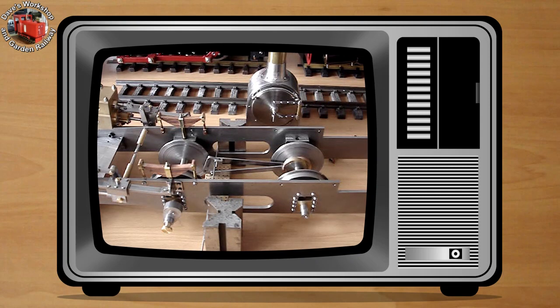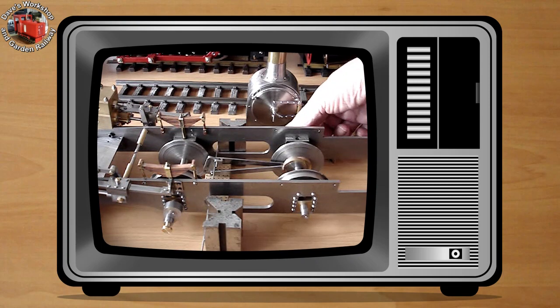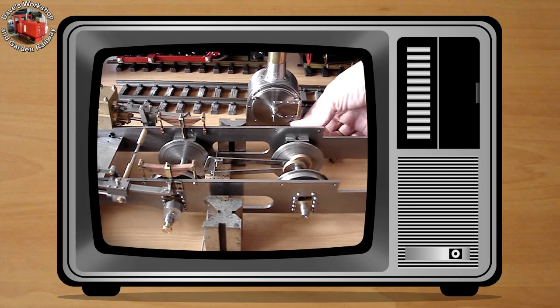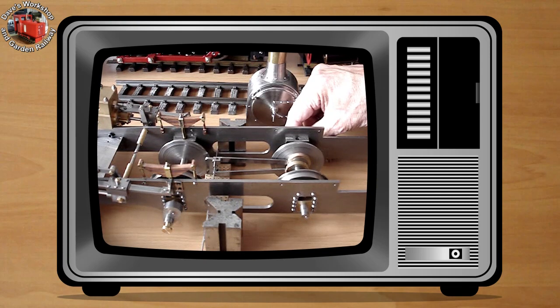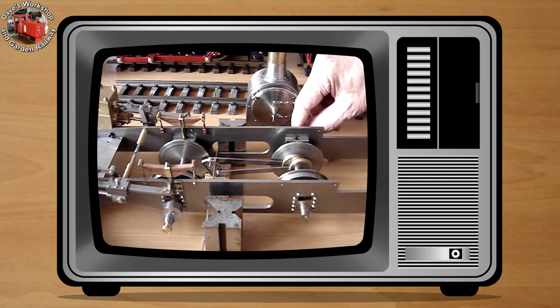Welcome to the live steam build of Charles, the Penrhyn quarry engine. This is being built to 1/12th scale, to run on gauge 1 or G gauge, 45mm gauge track.